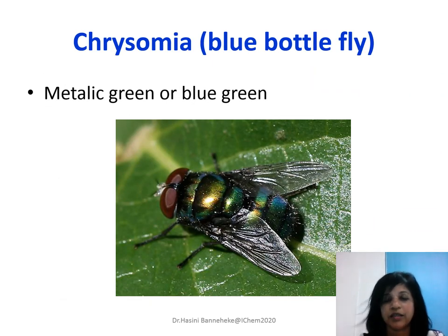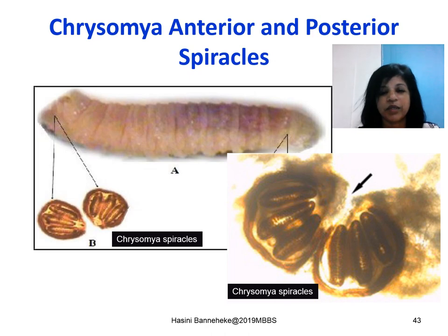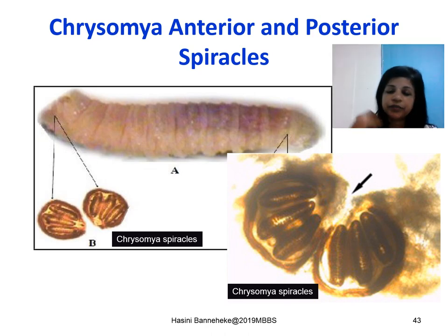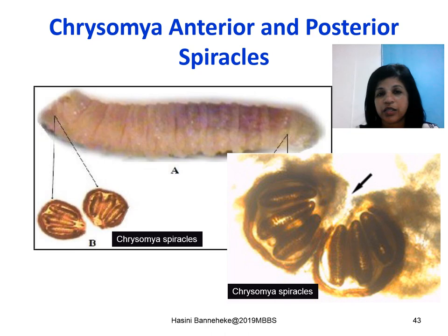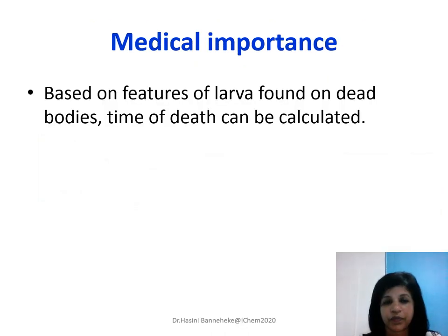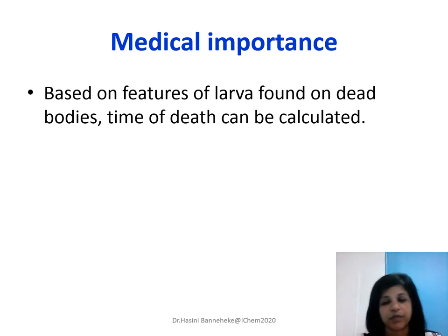Moving on to Chrysomia, the blue bottle fly. The name is given because of its appearance — it has a green-blue appearance. These are commonly seen on feces and similar animal material. They have the same life cycle stages, and their spiracles are placed on both anterior and posterior ends. Based on the features of the larvae, in forensic medicine, knowing which larva it is allows back-calculation to estimate the time of death.